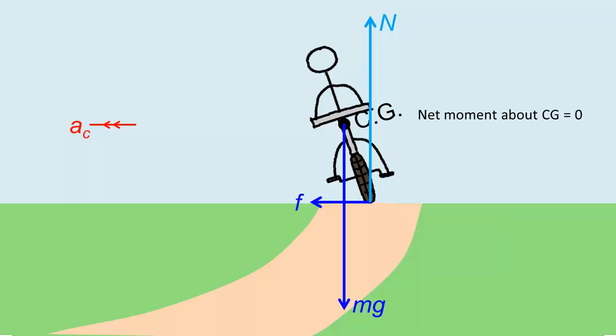In fact, the cyclist learns to lean just enough so that the resultant contact force passes right through his CG. Basically, the cyclist learns to maintain rotational equilibrium.